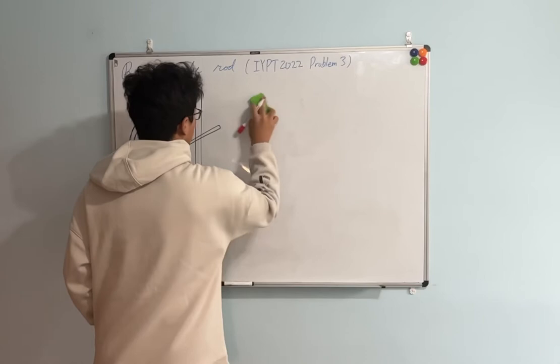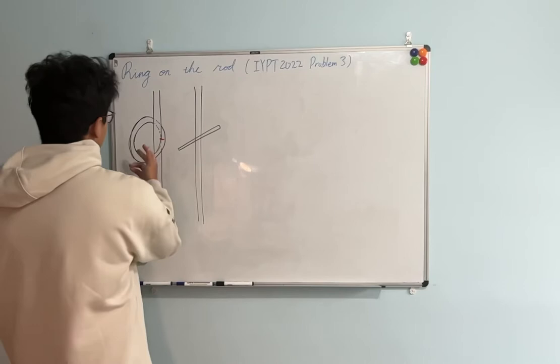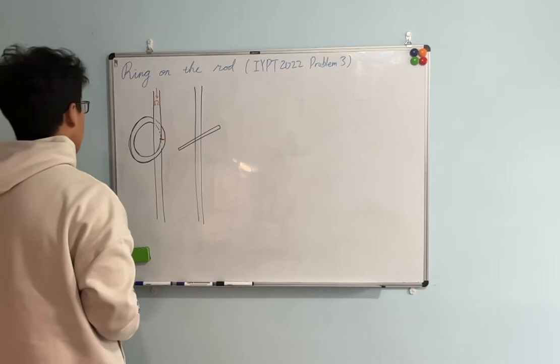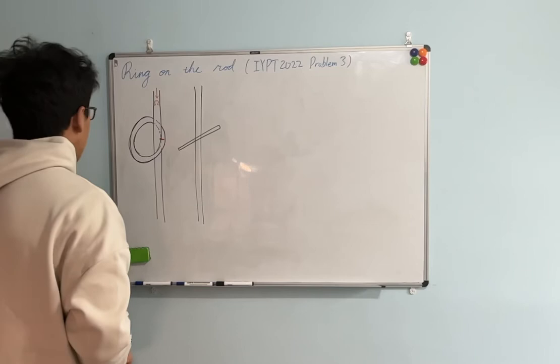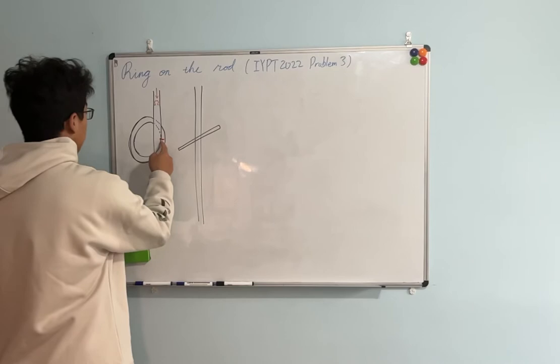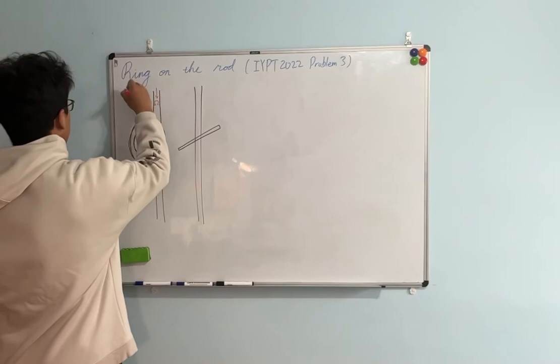I'm currently using the precession model to consider this problem. In the experiment video we can see the ring is first rotating around the rod with a precession angular velocity, which we represent with capital Ω. Now let's set up the coordinate system. As I said, the contact point is alongside the ring, so the ring is actually pointing toward us like this — this is its normal vector.